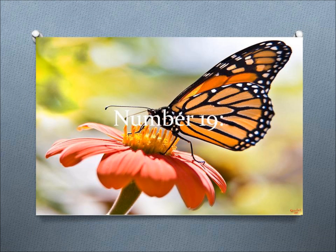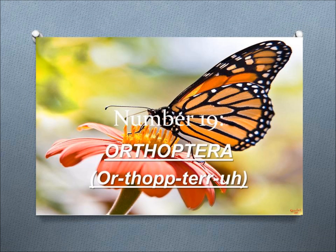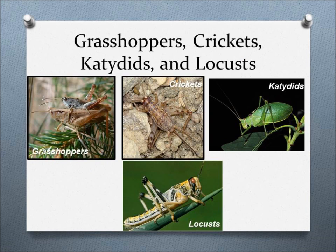Number 19, Orthoptera. This order includes grasshoppers, crickets, katydids, and locusts. These insects have strong hind legs and are very good jumpers.